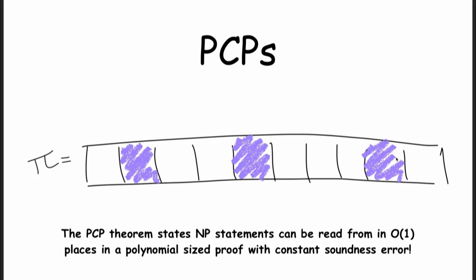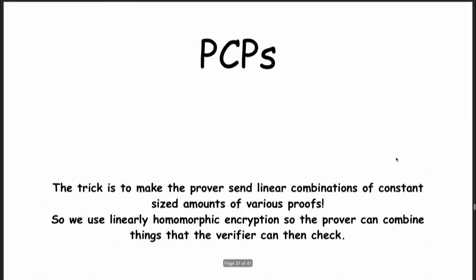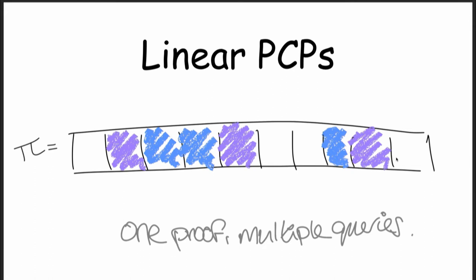There are two different ways in which people repeat, and these are the next two slots in the diagram. The first way is called linear PCPs. Instead of the original PCP theorem where you sample from a number of points in the proof, in linear PCPs you sample linear combinations of the proof. It seems like someone is sending you a number of queries — and then from this one proof, you take the results of all those queries and send all the answers back. This is a linear PCP, the next step in the seven stages.